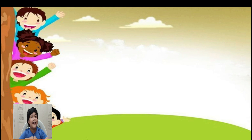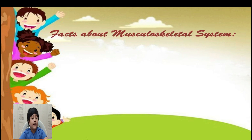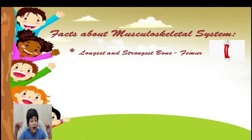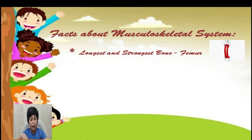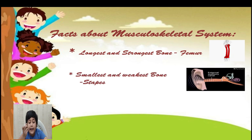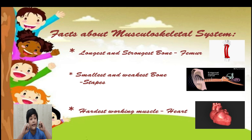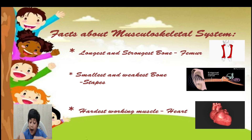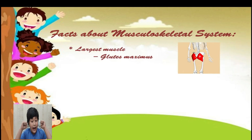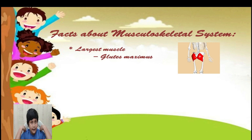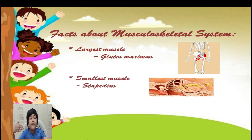Till now we have learnt about the musculoskeletal system. Now we will know some interesting facts about them. The longest and strongest bone in our body is the femur, that is our thigh bone. The smallest bone in our body is the stapes, which is present in our ears. The hardest working muscle in our body is the heart. The largest muscle in our body is the gluteus maximus, which is present in our buttocks.